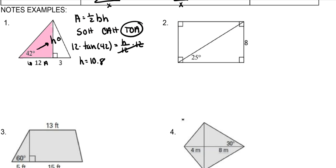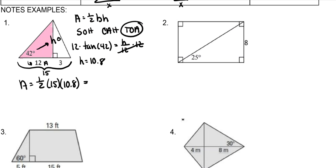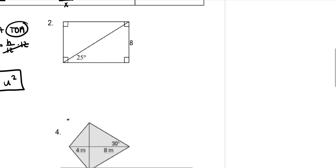Don't forget that whenever you do calculations with trig in your calculator, you must be in degrees. Always check to make sure you're in degrees. Now we can find the area: half times the whole base, which is 15 (because 12 plus 3), times the height we just found, 10.8. Multiply that all together and you get 81.04 units squared. You could also just round it to 81 — it's up to you.